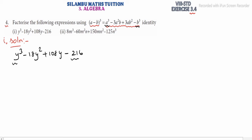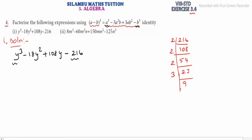For the number 216, we find the prime factors. Dividing by 2: 108. Dividing by 2 again: 54. Dividing by 2: 27. Dividing by 3: 9. Dividing by 3: 3. Dividing by 3: 1. So 216 equals 2 cubed times 3 cubed, which by the property a to the m times b to the m equals ab whole to the m gives us 6 cube.